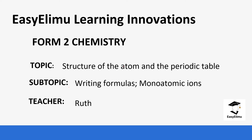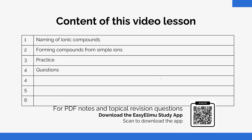Welcome to EZLM Learning Simplified. My name is Ruth and today we are going to be learning on the topic: structure of the atom and the periodic table. Our focus today will be writing formulas derived from monoatomic ions. When you talk about monoatomic ions you are basically talking about ions made up of one atom. First you are going to learn how to name these ions, then form compounds, see some practice questions, and do an exercise.